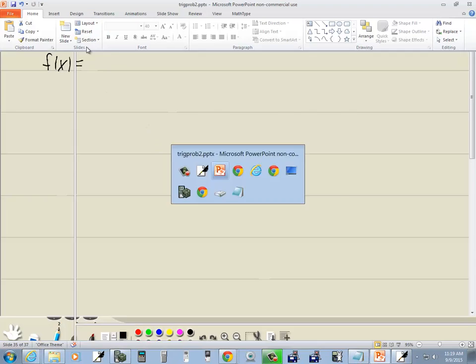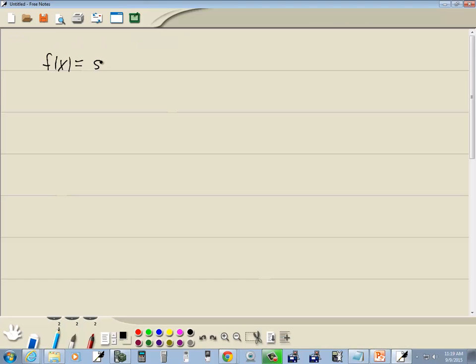We've got f(x) = sin(x) - cos(x). It's best instead of function notation to have a y here, so we'll have y = sin(x) - cos(x).